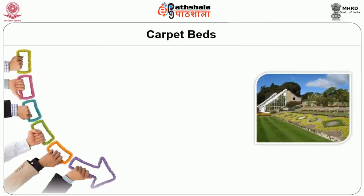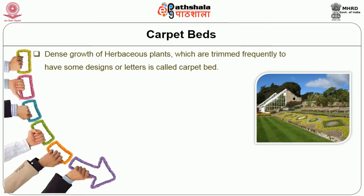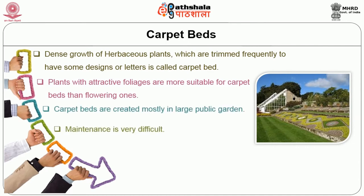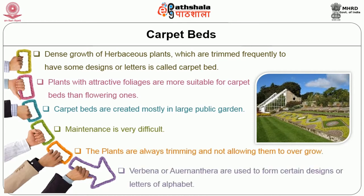We will discuss carpet beds. Dense growth of carpet plants which are trimmed frequently to have some designs or letters is called carpet beds. Plants with attractive foliage are more suitable for carpet beds than flowering ones. Carpet beds are created mostly in large public gardens. Maintenance is very difficult as the plants are always trimmed and not allowed to overgrow. Verbena or Alternanthera are used to form sunken designs or letters in carpet beds.